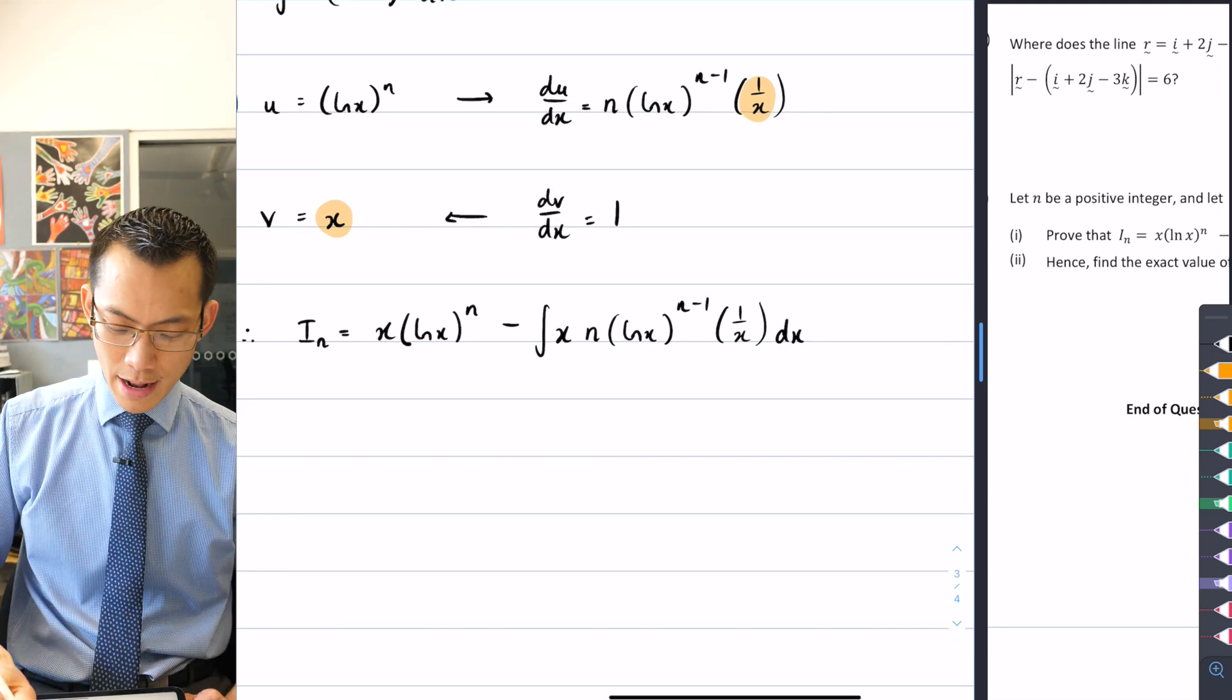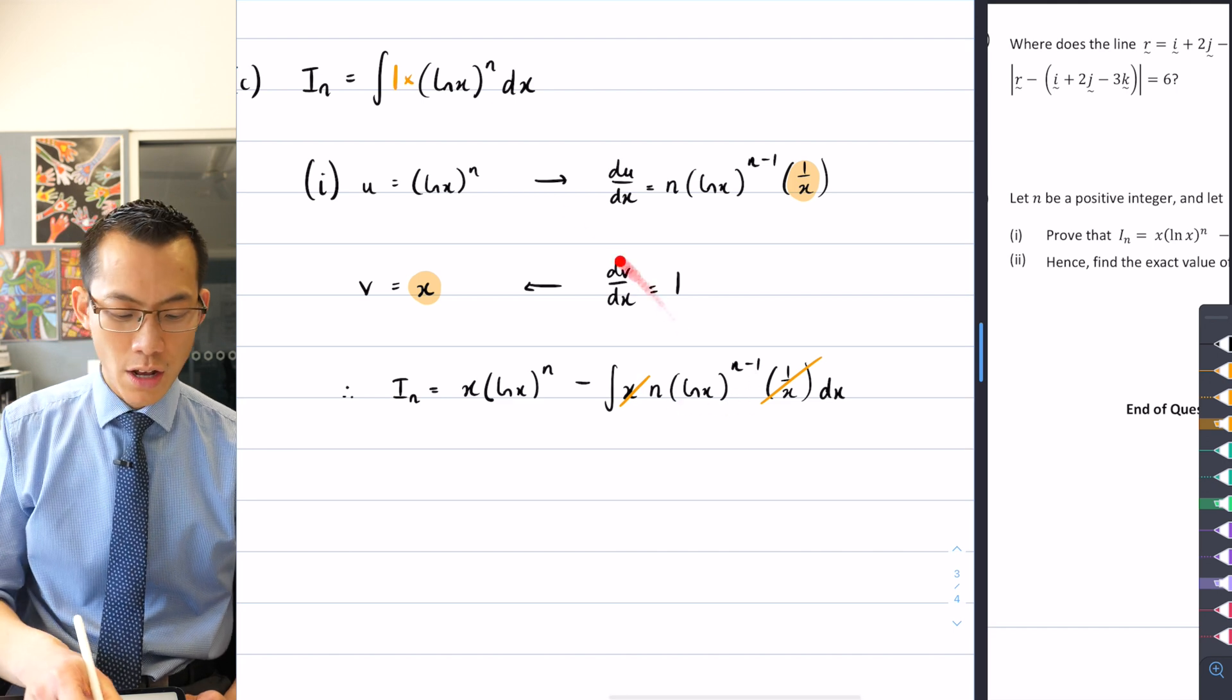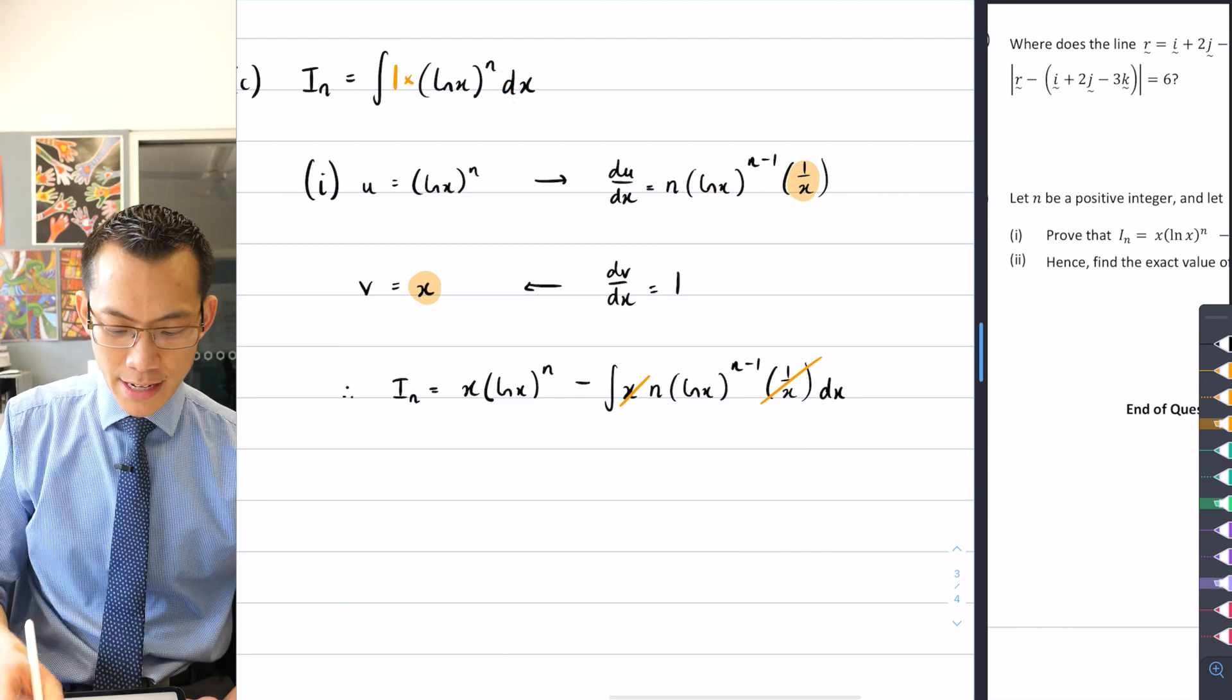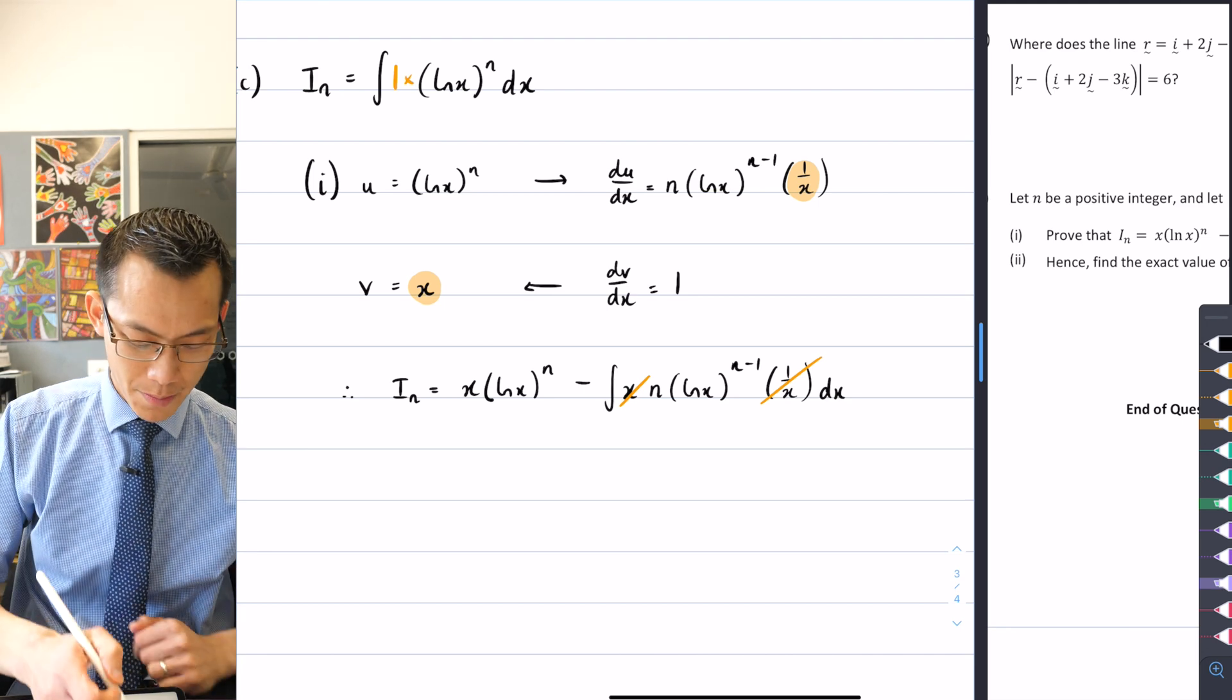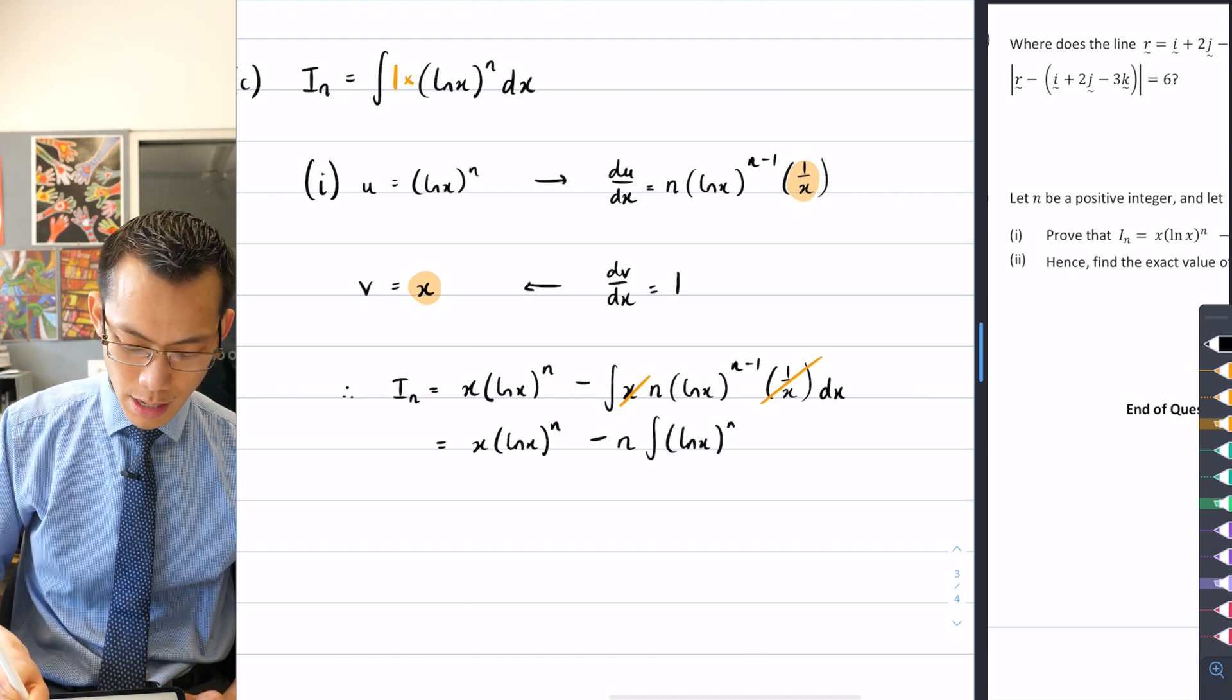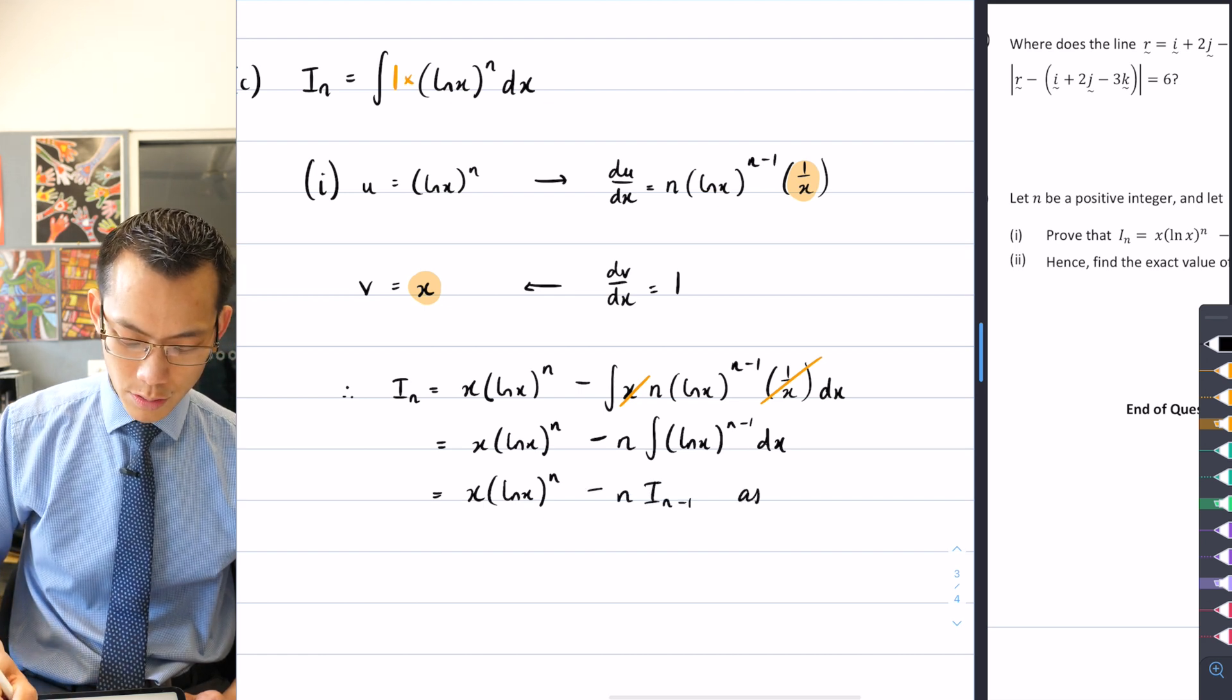So I'm ready to do my integration by parts now. I can say, therefore, $I_n$ equals, here comes uv, so it's $x \log x^n$ out the front, which is promising because that's what we needed back over here in the question. And then I'm going to subtract v times du. But notice what's going on here. This x that we've introduced in the v is going to cancel with this $1/x$ that we introduced in the du.